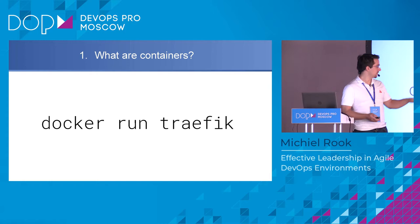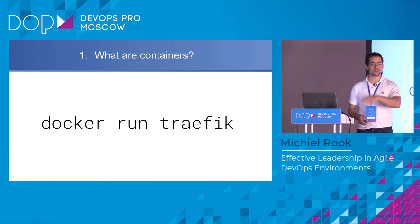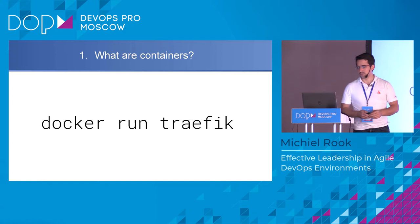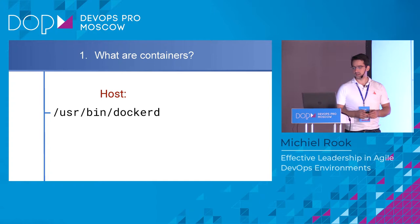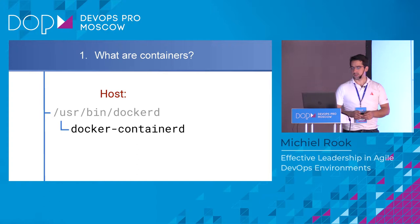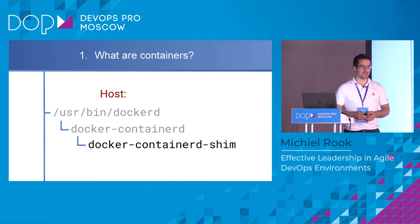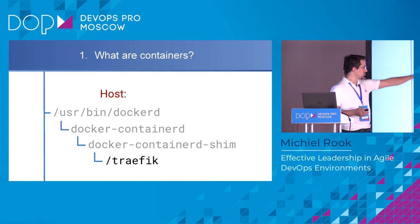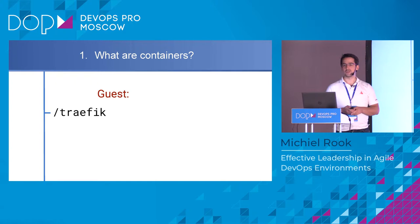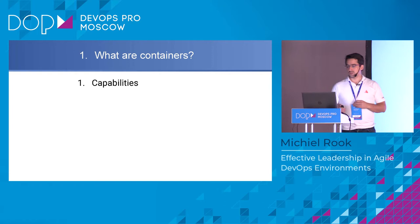So what happens if you do 'docker run traefik'? Traefik, by the way, is a wonderful reverse proxy — it does Let's Encrypt for you, has lots of backends, so if you want to deploy a reverse proxy in a dockerized environment, I'd thoroughly recommend Traefik. If you look at the process list, you see: Docker daemon, then containerd, then containerd-shim, and then our program. That's how it looks from the outside. From the inside, you just see one program running — Traefik — with nothing of the outside processes or the containerization engine visible.